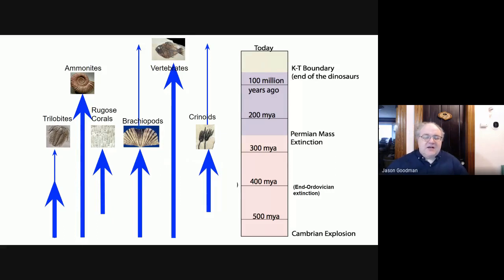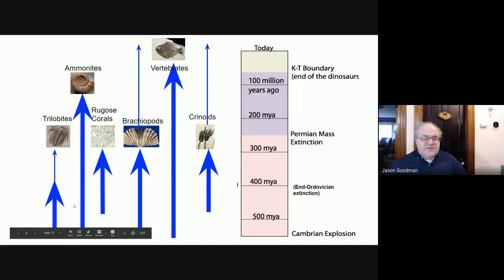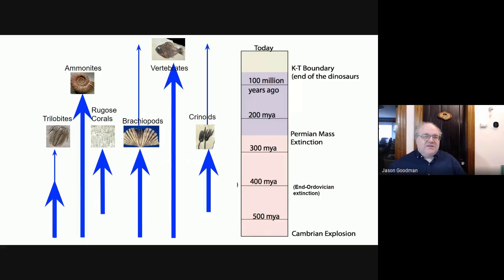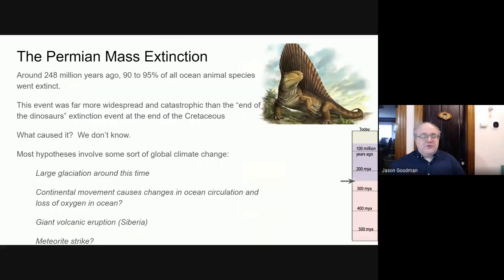By far the most significant of these was one that happened about 250 million years ago, right at the end of what's called the Permian period. Many major groups of organisms, including the well-known trilobites and some less well-known things — crinoids, brachiopods, which look like clams but totally aren't (it's a convergent evolution thing) — and a certain type of very common coral, all went extinct. In fact, 95% of all the ocean animal species went extinct right at this particular time period.